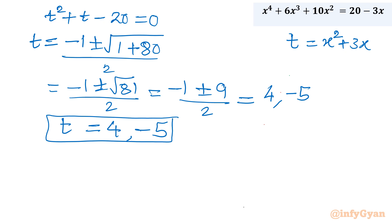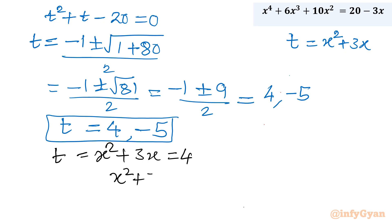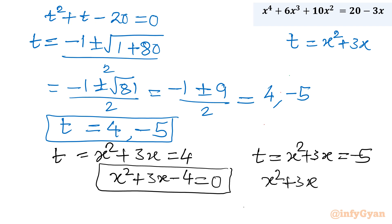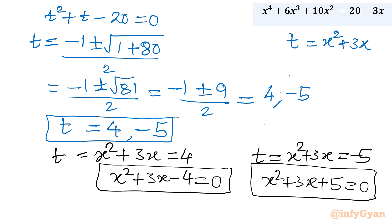Now let us put back the substitution t = x² + 3x. For t = 4: x² + 3x = 4, giving x² + 3x − 4 = 0. This is the first equation we will solve. For t = −5: x² + 3x = −5, giving x² + 3x + 5 = 0. Let us solve both equations for 4 solutions, since the original equation is quartic.